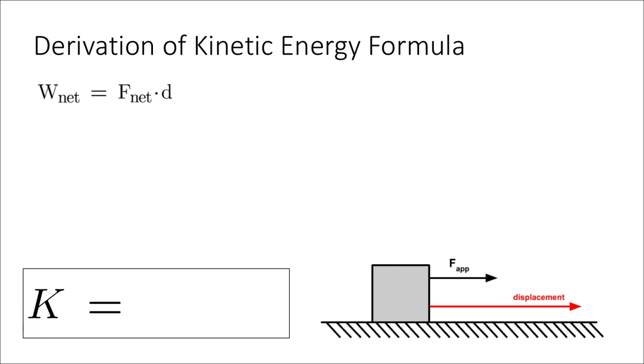So we can also say then that the net work on an object is equal to, we know the net force via Newton's second law, is equal to the mass of an object times its acceleration. So we can say this is equal to m times a times d, mass times acceleration times displacement.